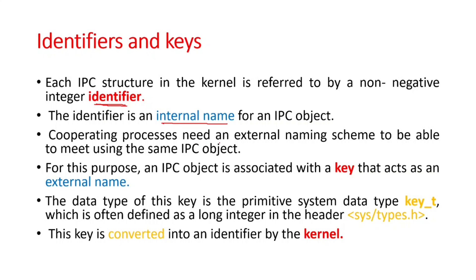The cooperating processes need to have an external naming scheme to be able to meet at the same IPC object. For this purpose, an IPC object is associated with a key that acts as an external name. Multiple processes involved in communication can meet through this key. The data type of this key is the primitive data type key_t, which is often defined as a long integer in the header sys/types.h. However, we are not supposed to use int or long directly; rather we make use of key_t.